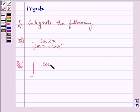The function given to us is cos 2x divided by (cos x + sin x)² with respect to dx.